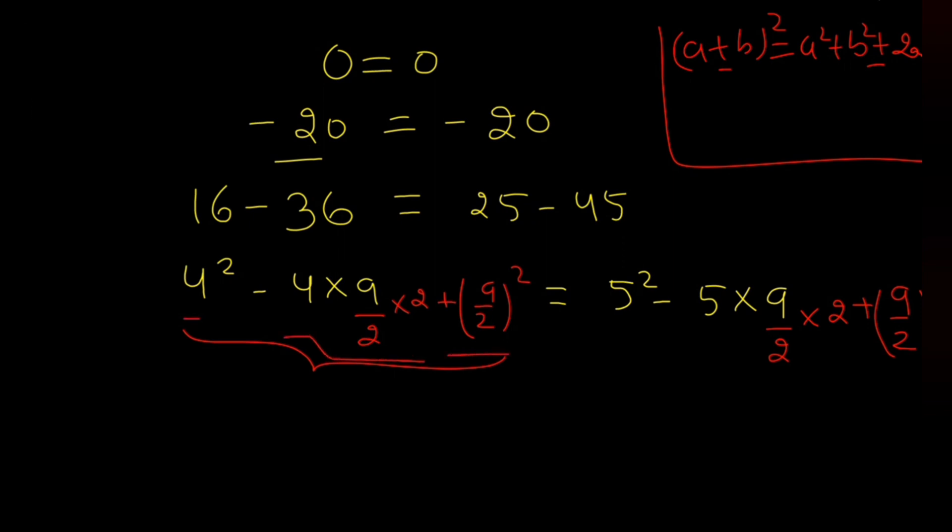So I can write this as 4 minus 9 by 2 whole squared. Similarly on this side, this is 5 minus 9 by 2 whole squared.